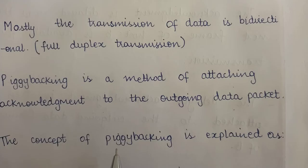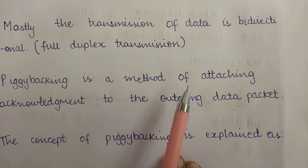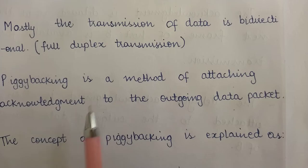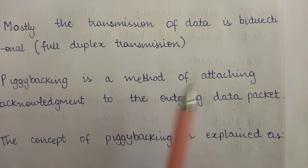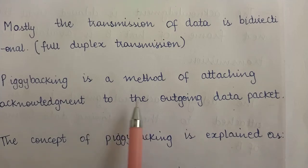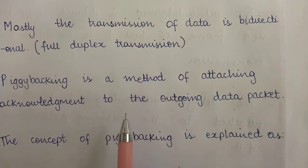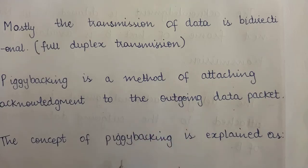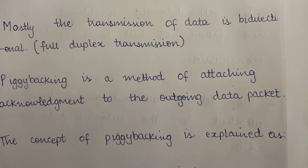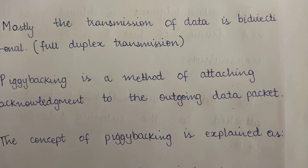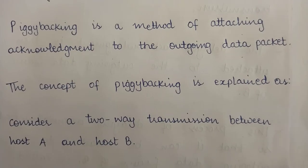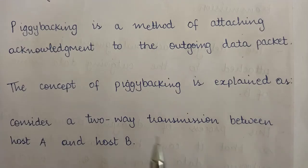Since we are talking of bi-directional or full duplex transmission, the sender which sent data would also receive data, and the receiver which received data will also send data. When the receiver wants to send its own data, it will send the acknowledgement with that data frame instead of sending the acknowledgement separately. The acknowledgement is not sent separately but along with the data frames.